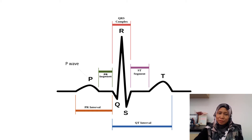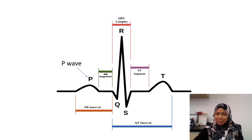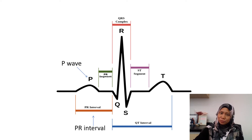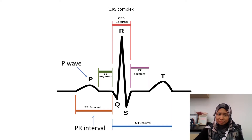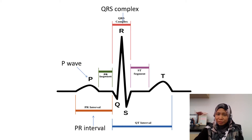We have the P wave, which reflects atrial depolarization. We also have the PR interval, which shows atrial depolarization plus AV nodal conduction. This is followed by the QRS complex, which is very important because it reflects ventricular depolarization. And then we have the T wave, which shows ventricular repolarization.